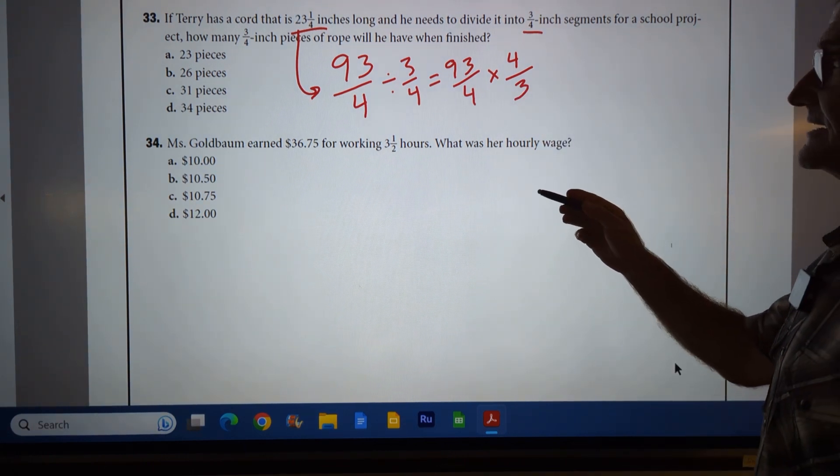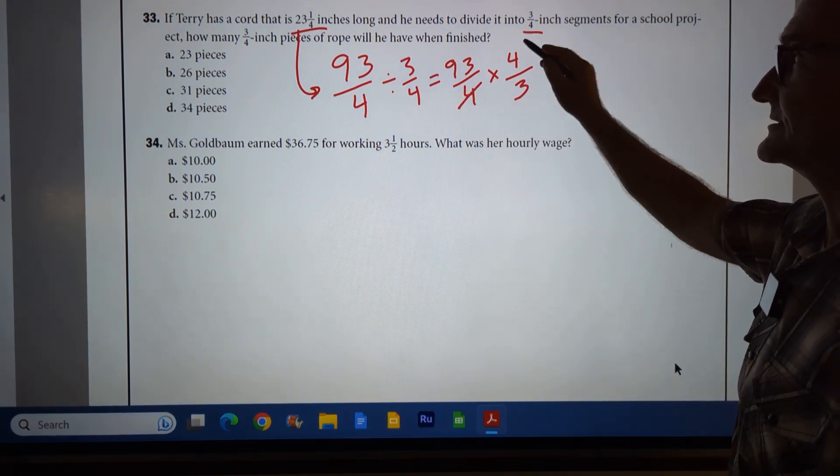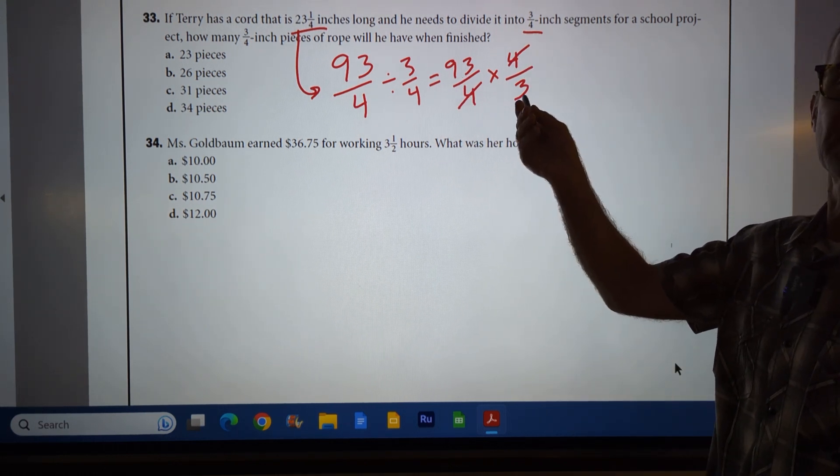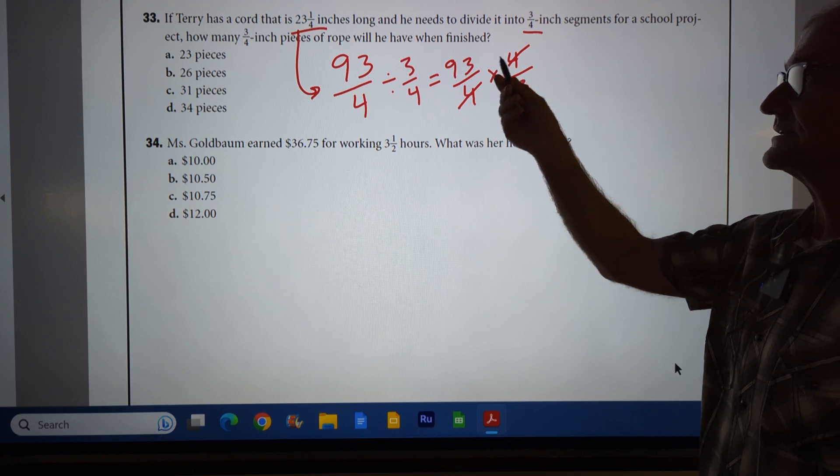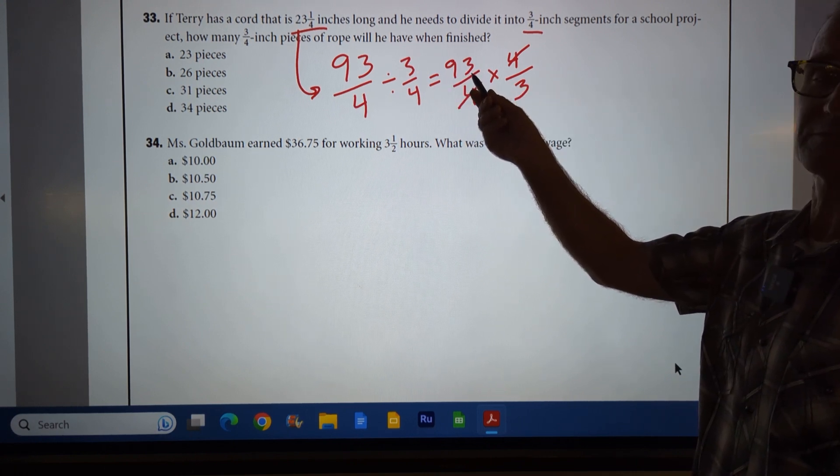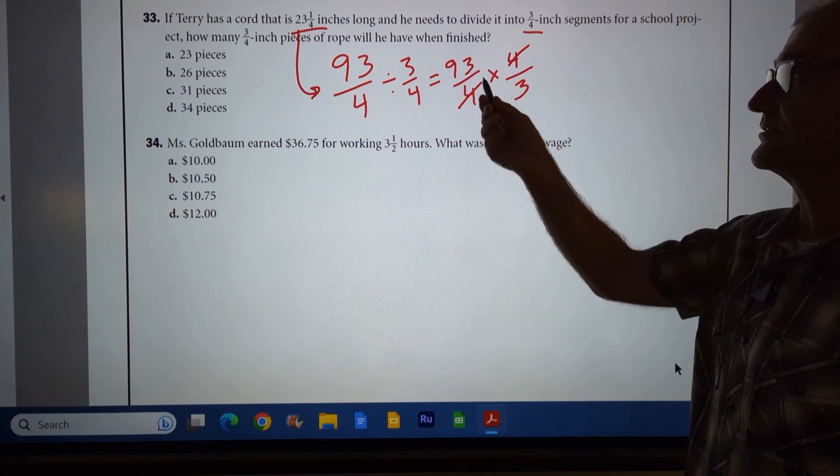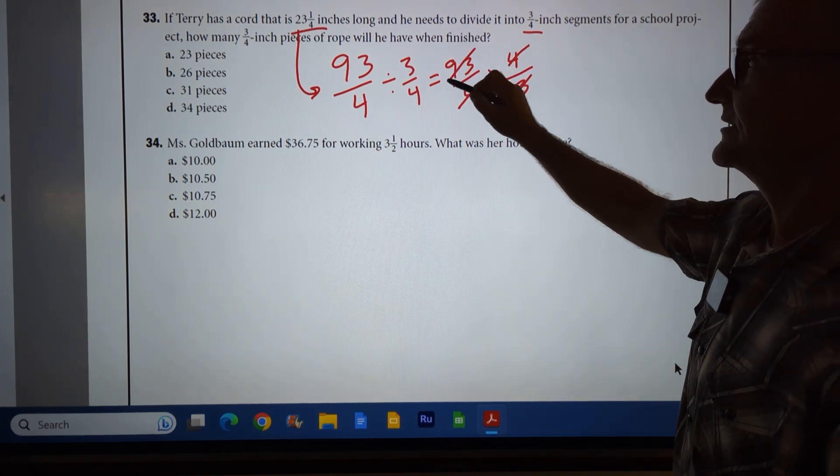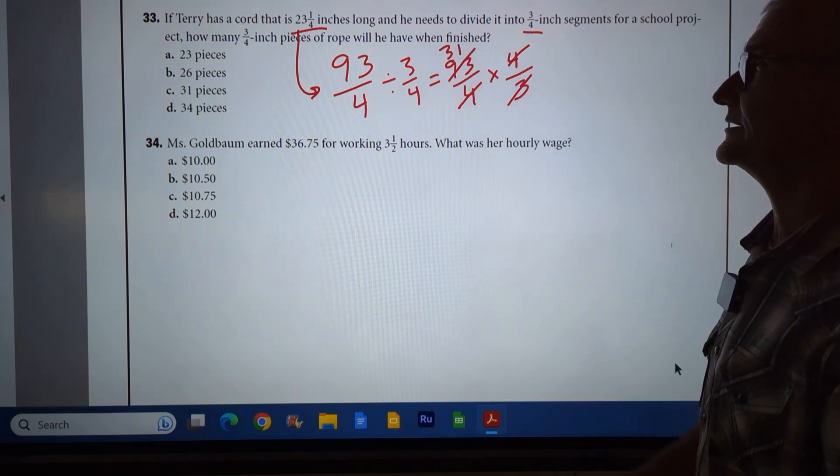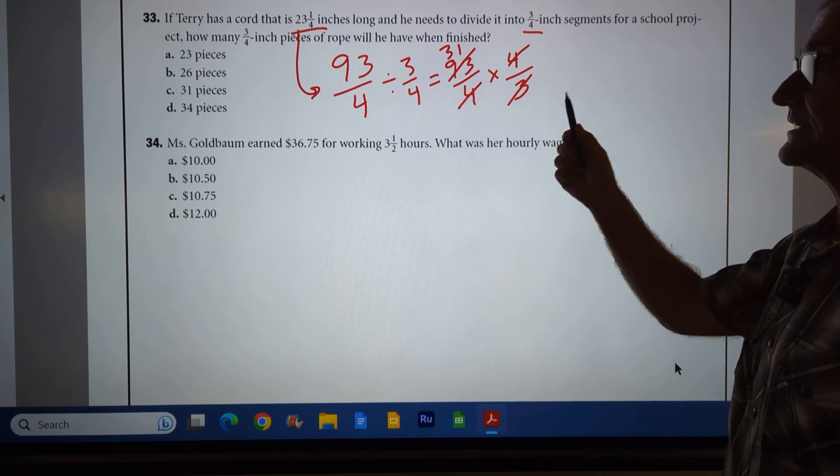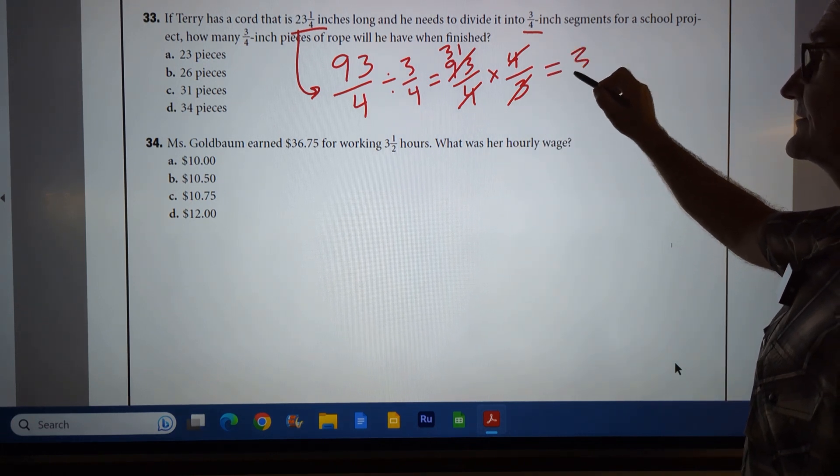Then I'm going to see if I can cancel anything. Four will go into here once, into here once. I know that 93 is divisible by three as well. Three is going to go into 90 thirty times with three left over. So I can see that's going to go in there 31 times, so that three will go into here once. Three will go into here 31 times. Again, three times 31 is 93. Everything else is canceled out, and that gives me 31.